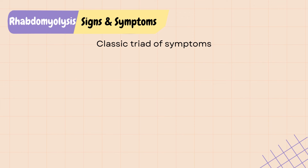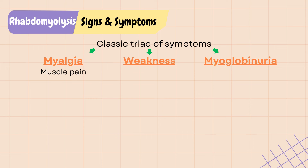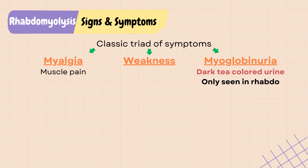The classic triad of rhabdo symptoms are myalgia or muscle pain, weakness, and myoglobinuria, which is the presence of myoglobin in the urine causing the dark tea-colored urine characteristic of rhabdo. Although less than 10 percent of patients present with all three symptoms, it is important to know this for test purposes. Most patients are asymptomatic and have only mild abnormal labs.